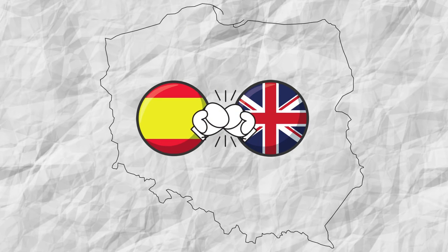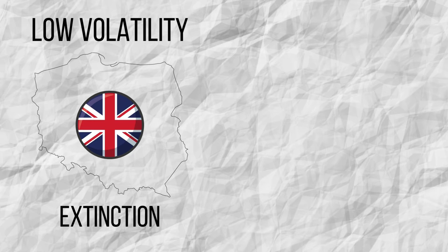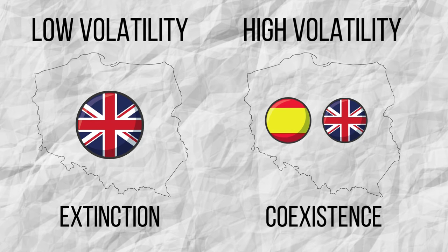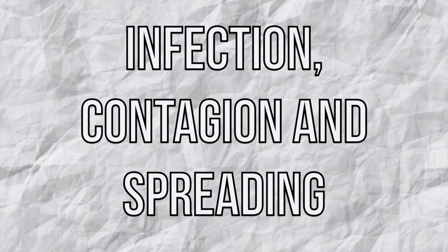So, how will the battle between the two languages end? The most important factor for the outcome is volatility. Low volatility means that people have a low tendency to switch languages out of ignorance or stubbornness. The situation leads to the dominance of one language and thus to the extinction of the other. High volatility, on the other hand, implies a predisposition to switch languages.